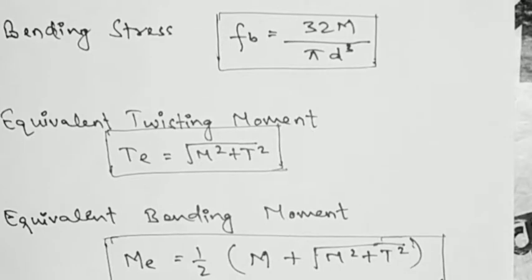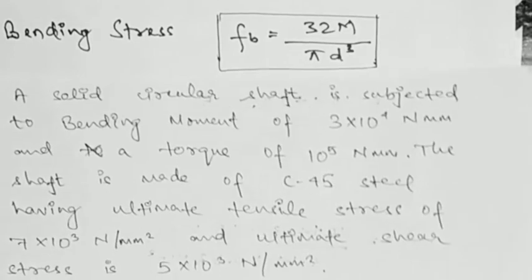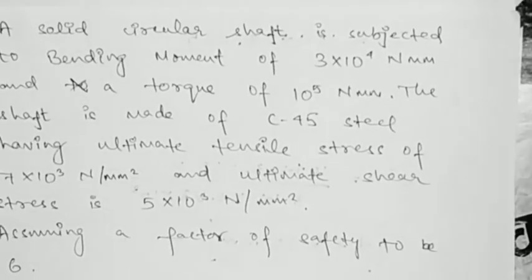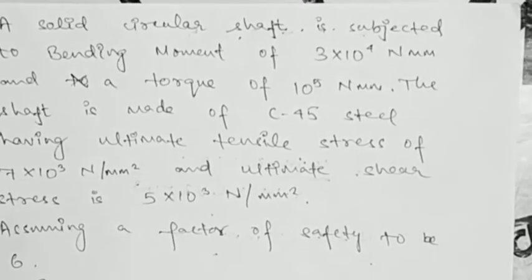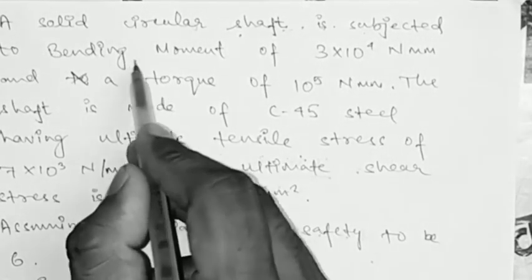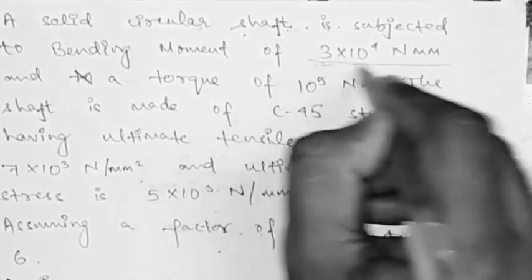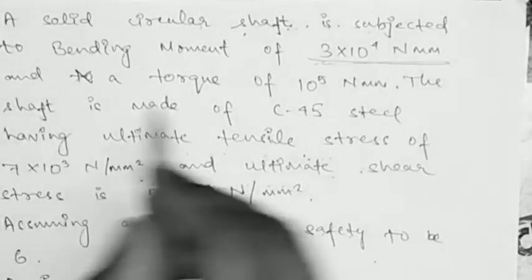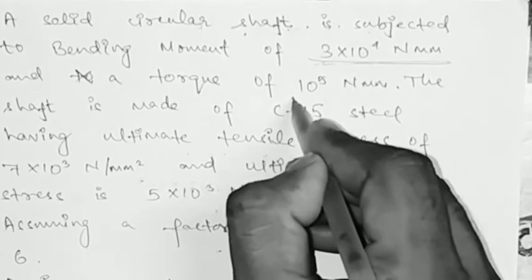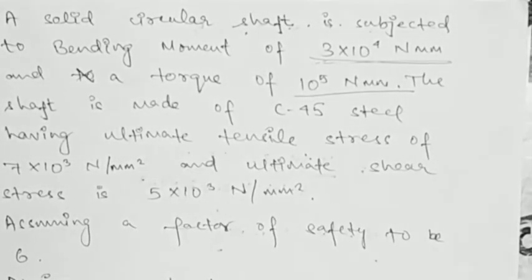Let's consider a numerical problem which will contain these two moments — twisting moment and bending moment. The numerical is: a solid circular shaft is subjected to a bending moment of 3 × 10⁴ Newton-millimeters and a torque of 10⁵ Newton-millimeters. Here the word torque means twisting moment.